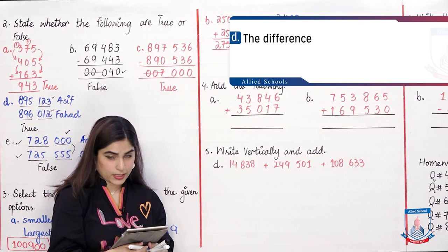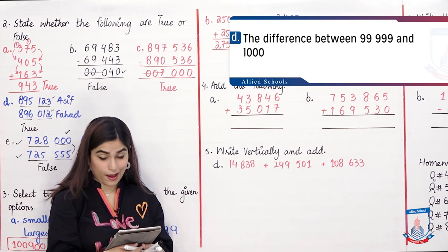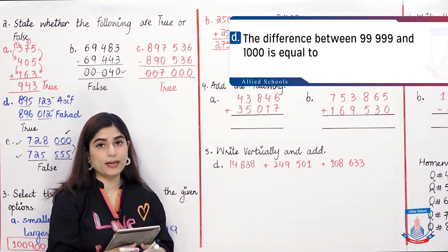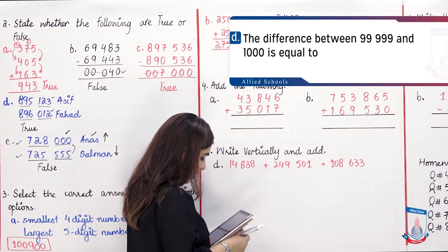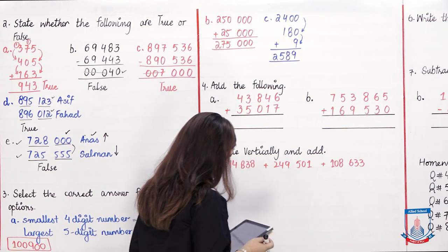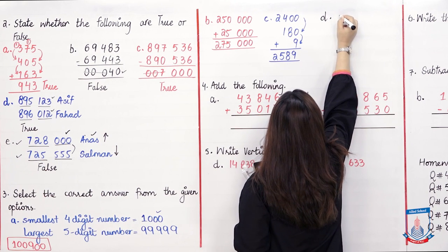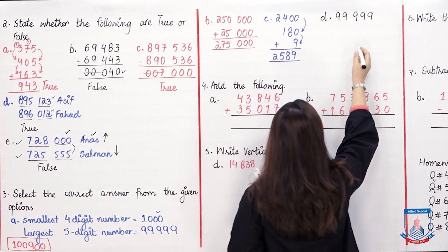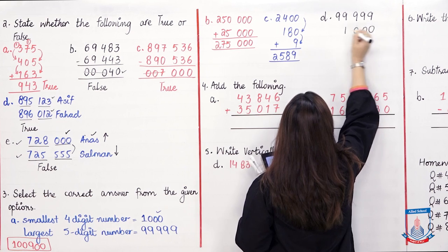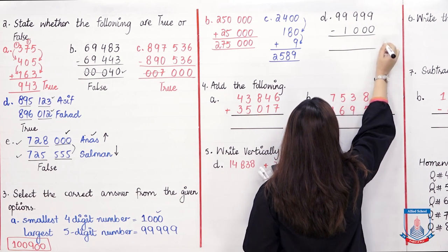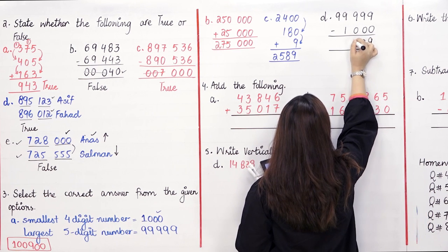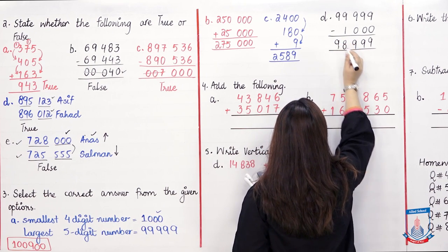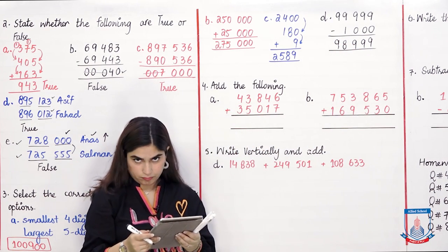Part D: The difference between 99,999 and 1,000. 'Difference' means subtract. 99,999 minus 1,000: ones 9, tens 9, hundreds 9, thousands 9 minus 1 is 8, ten-thousands 9 stays. The answer is 98,999.